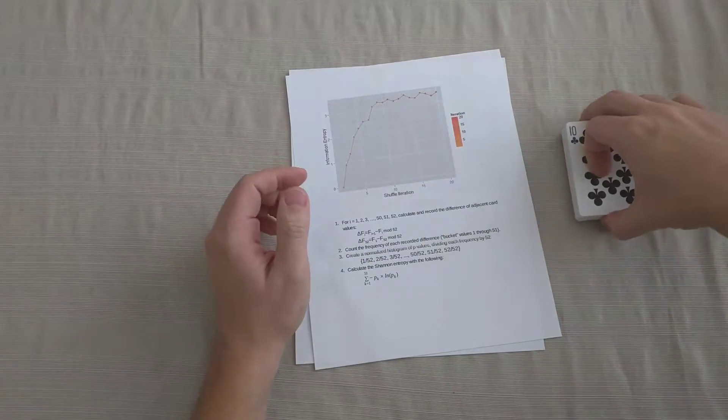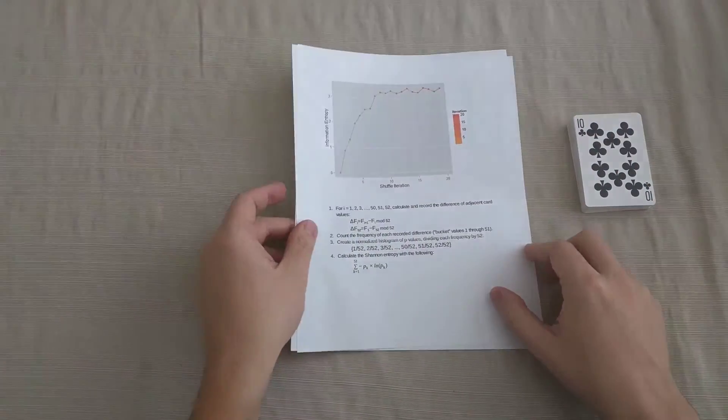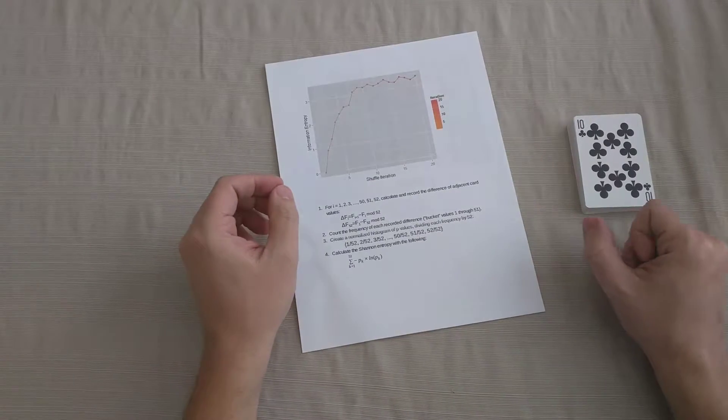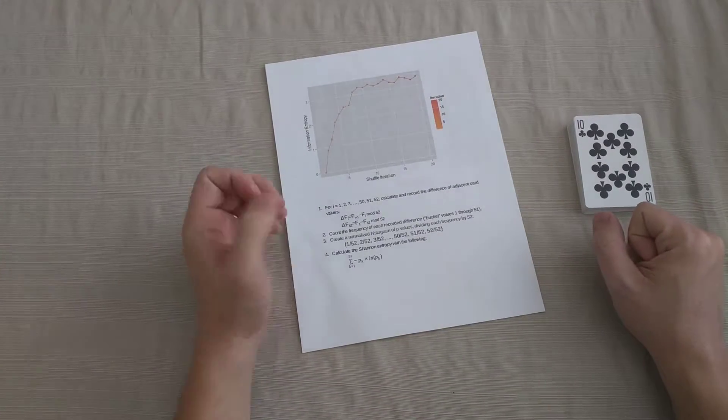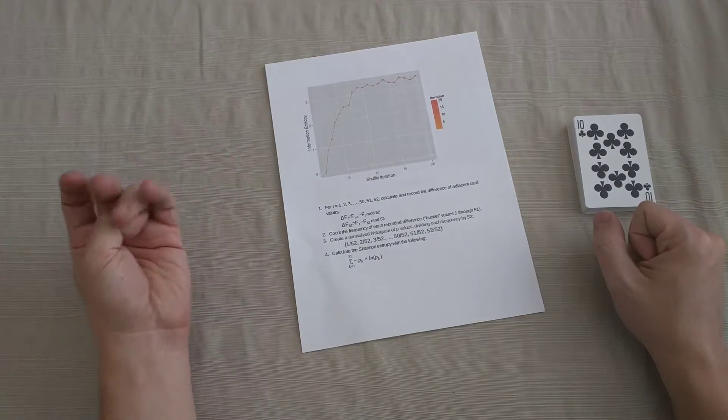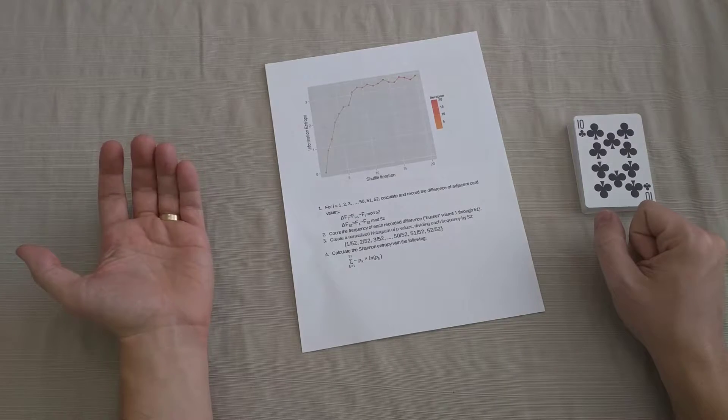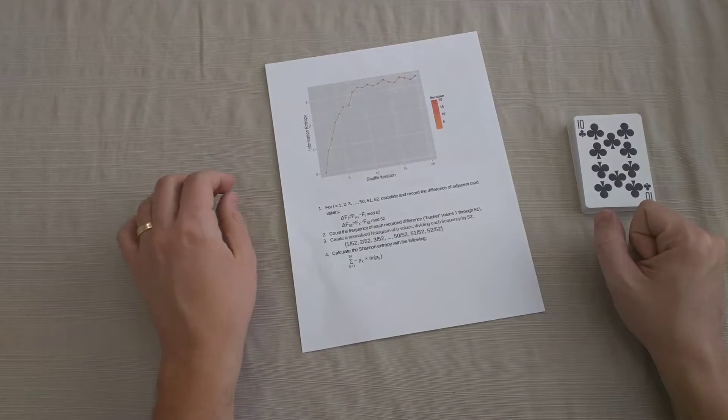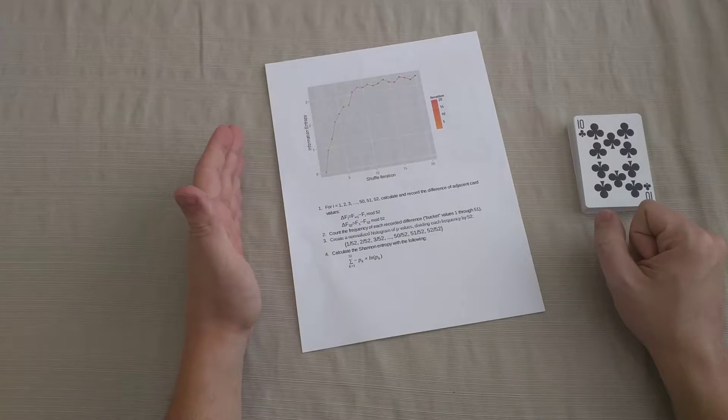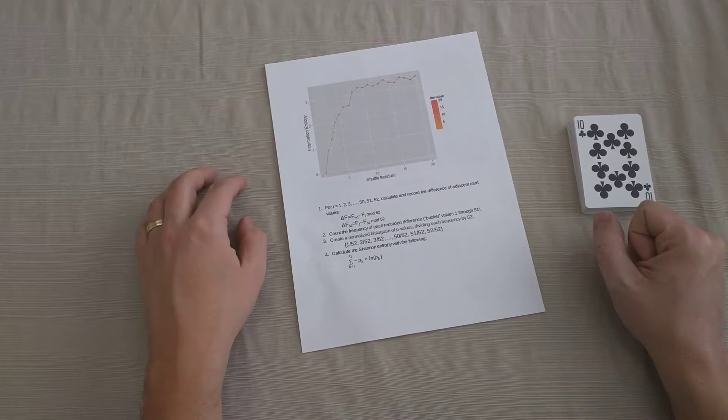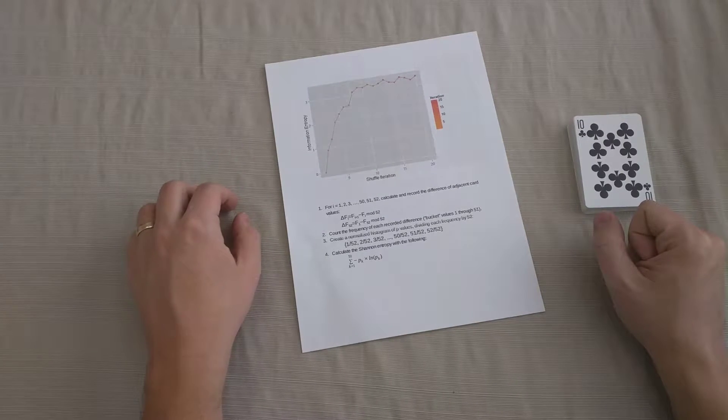So at this point, I have 52 recorded values. And each of them are going to have a value of 1 through 51. I think it makes sense that I'm not going to have a value of 0 because no two cards are identical. And I'm not going to have a value of 52 because there is no card assignment of 53. So I'll have all numerical values, recorded values of 1 through 51, but I'll have 52 of them.